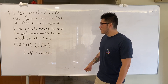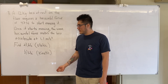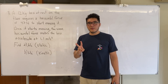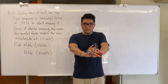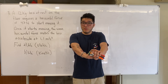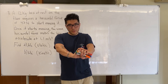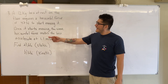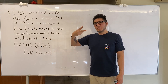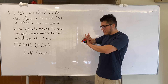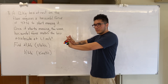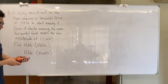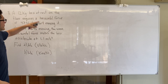Find part a: mu s, the coefficient of static friction, and part b: mu k, the coefficient of kinetic friction. This is a two-part question. First, the person tries to push the block but it doesn't move. Then once they find the force required to make it move, they apply that same force and the box accelerates at 1.1 meters per second squared.